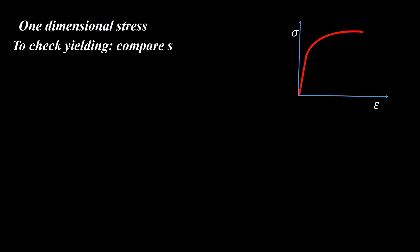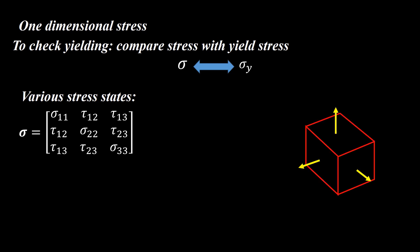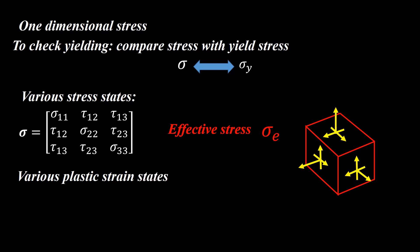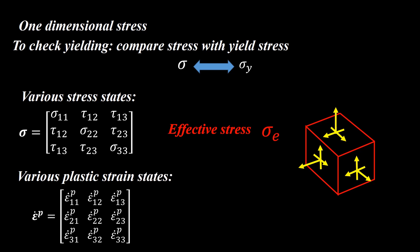We discussed one-dimensional behavior until now. In one-dimensional stress, we simply compare the applied stress with the yield stress. But in reality, various stress states may apply to a material — any combination of normal stresses in three directions and shear stresses in three planes makes the stress tensor at a material point. We need a concept known as effective stress: a scalar representative of the stress tensor that indicates whether a material is in the plastic region. Similarly, we use a scalar known as effective plastic strain. In plasticity we use rates or increments of plastic strains and solve incrementally.